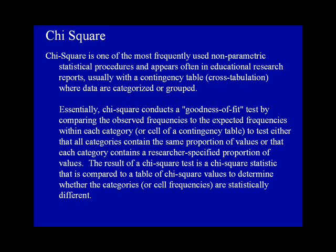The result of a Chi-square test is a Chi-square statistic that is compared to a table of Chi-square values to determine whether the categories or cell frequencies are statistically different.